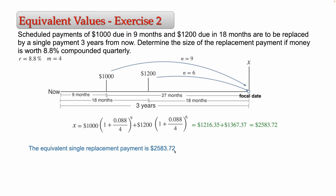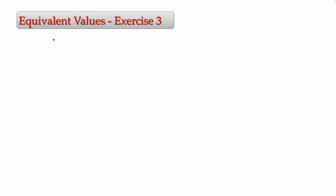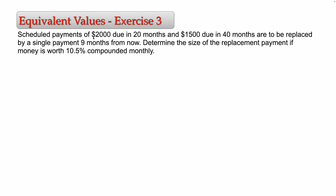That explains the first problem. Let's solve another exercise — exercise number three. Scheduled payments of $2,000 due in 20 months and $1,500 due in 14 months are to be replaced by a single payment nine months from now. Determine the size of the replacement payment if money is worth 10.5% compounded monthly.